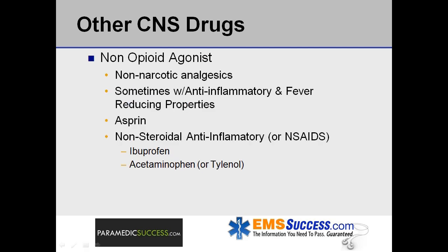Non-opioid agonists are non-narcotic analgesics that sometimes also have anti-inflammatory and fever-reducing properties. Such drugs include aspirin and non-steroidal anti-inflammatories, or NSAIDs, such as ibuprofen and acetaminophen, also known as Tylenol.